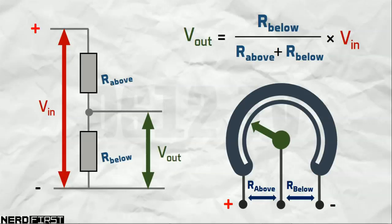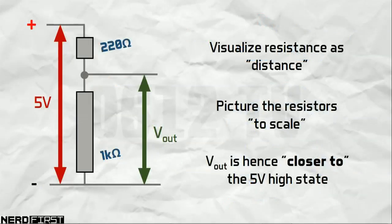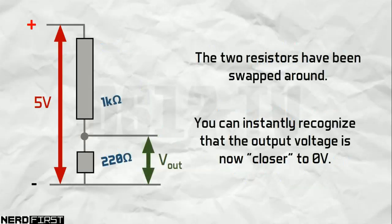Here's a rule of thumb that could make things a little bit easier. If you were to treat the resistances as distances, then you could simply say that the closer you are to the high power source, the higher the output voltage is going to be. Conversely, the closer you are to ground, the lower the voltage would be.